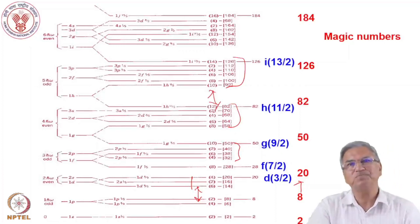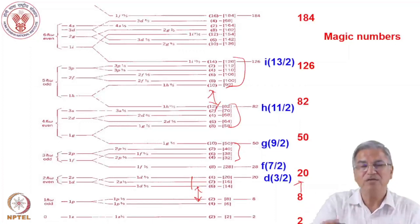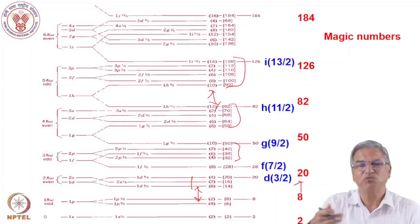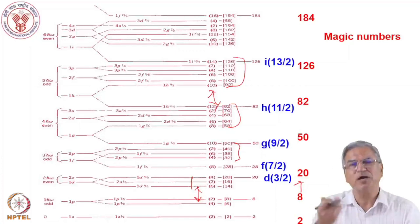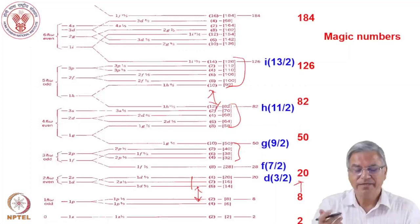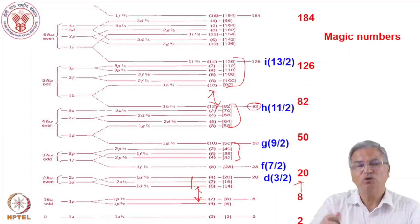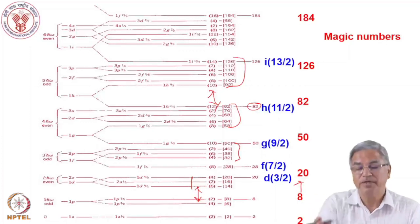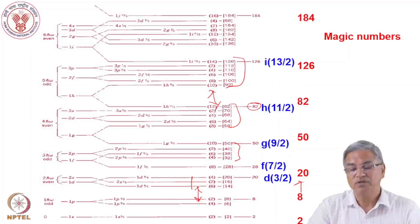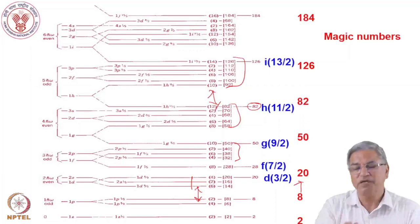A nucleus at a magic number is very compact. The low separation energy for nuclei one above the magic number arises because the extra nucleon above the closed shell can be easily removed. For example, a nucleus with 82 protons has a low neutron absorption cross section because it would not favor taking an additional neutron to become one nucleon above the magic number.